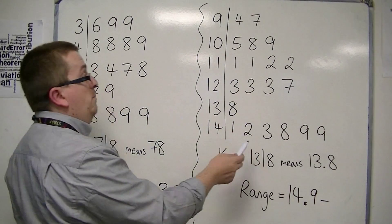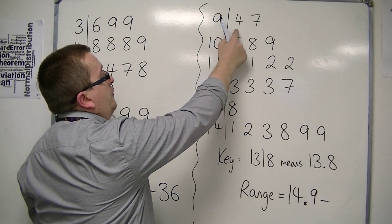And then we take away the smallest, which is 9.4.